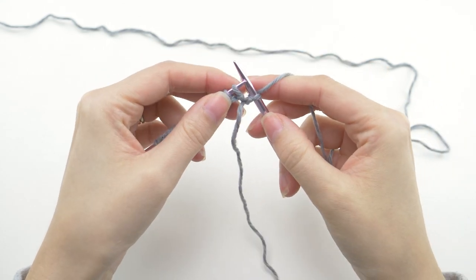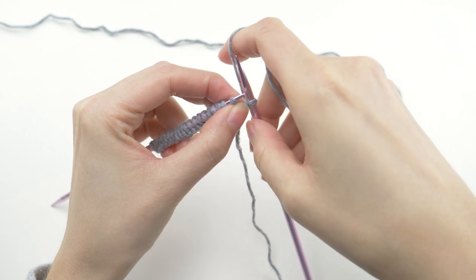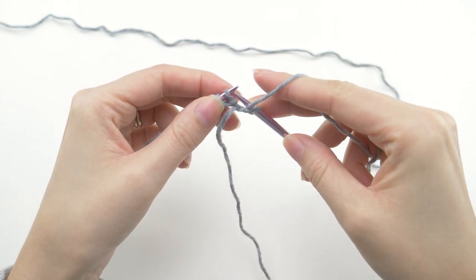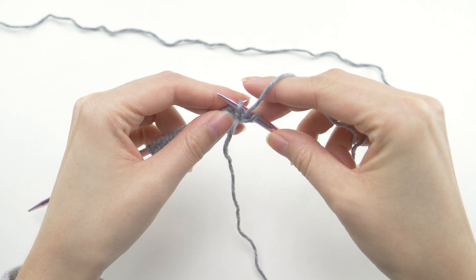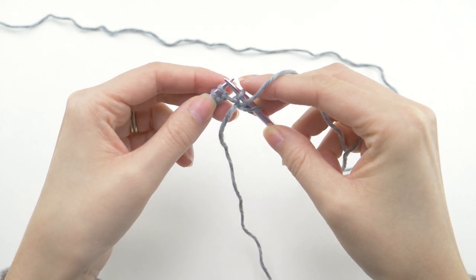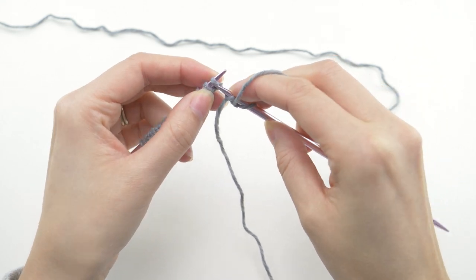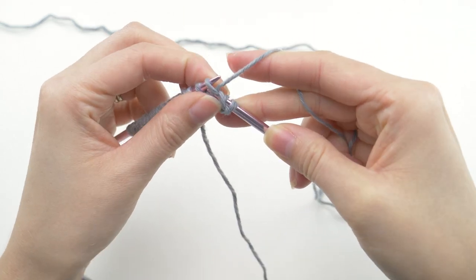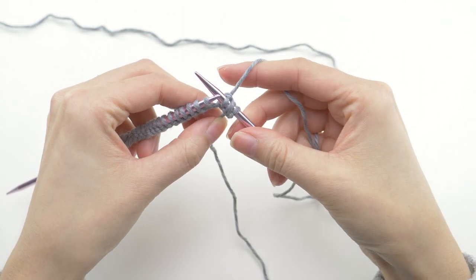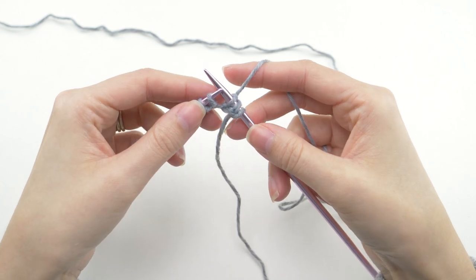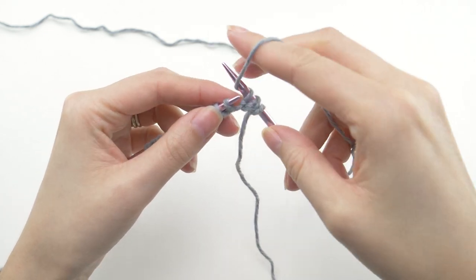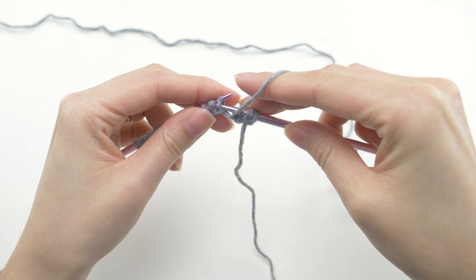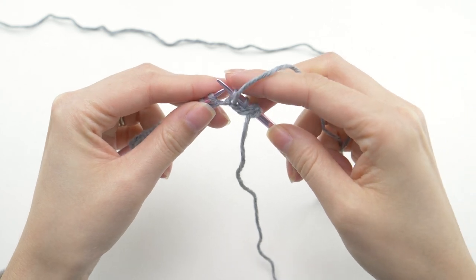And here's where the repeat for this row begins. Pull the yarn forward, and insert your needle like you're going to purl, but instead just slide it over. Then, with the yarn still forward, knit the next stitch. And repeat. Pull the yarn forward, slip one purlwise, and knit the next.